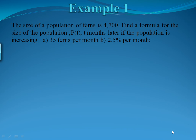Example 1. The size of a population of ferns is 4,700. Find a formula for the size of the population, P of t, t months later if the population is increasing: A, 35 ferns per month, and B, 2.5% per month.